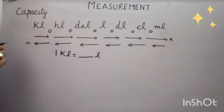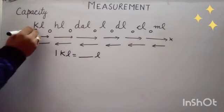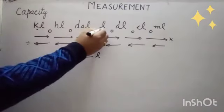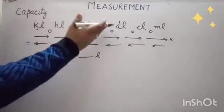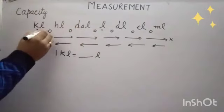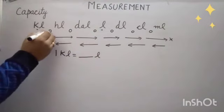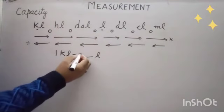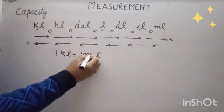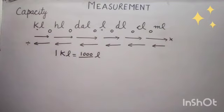This table will give you the answer. This is your kiloliter, this is your liter, and we are moving from bigger to smaller. And there is a gap of 3 zeros: 1, 2, 3. Three zeros means 1000, so 1 kiloliter is equal to 1000 liter.